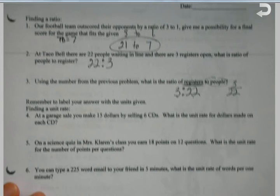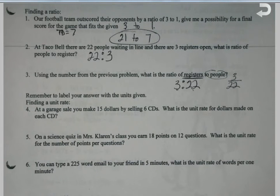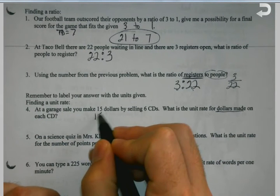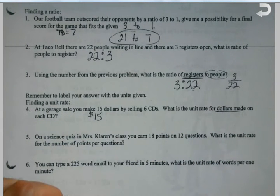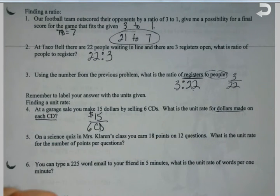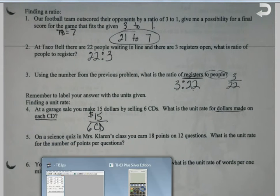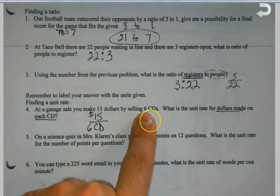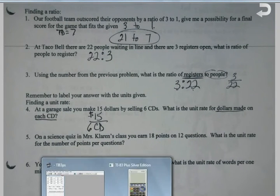Remember to label your answer with the units given. At a garage sale, you make $15 by selling six CDs. What's the unit rate for dollars made on each CD? Dollars made, $15. Put my dollar sign there. On each CD, which came second, and here's why I want to put the labels. Because I'm actually going to find the answer this time, since there's six CDs. I'm just using the numbers that they give me there.